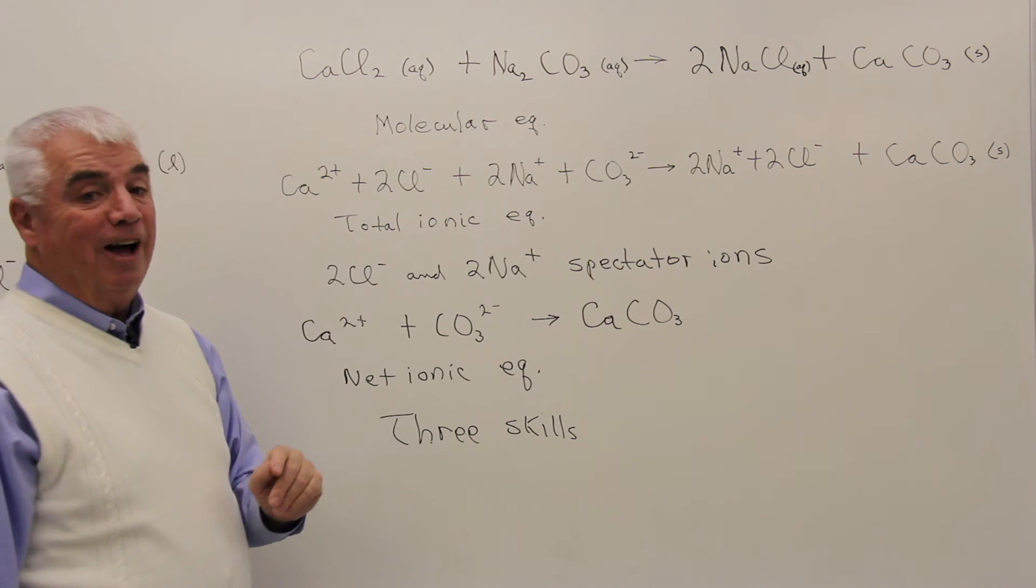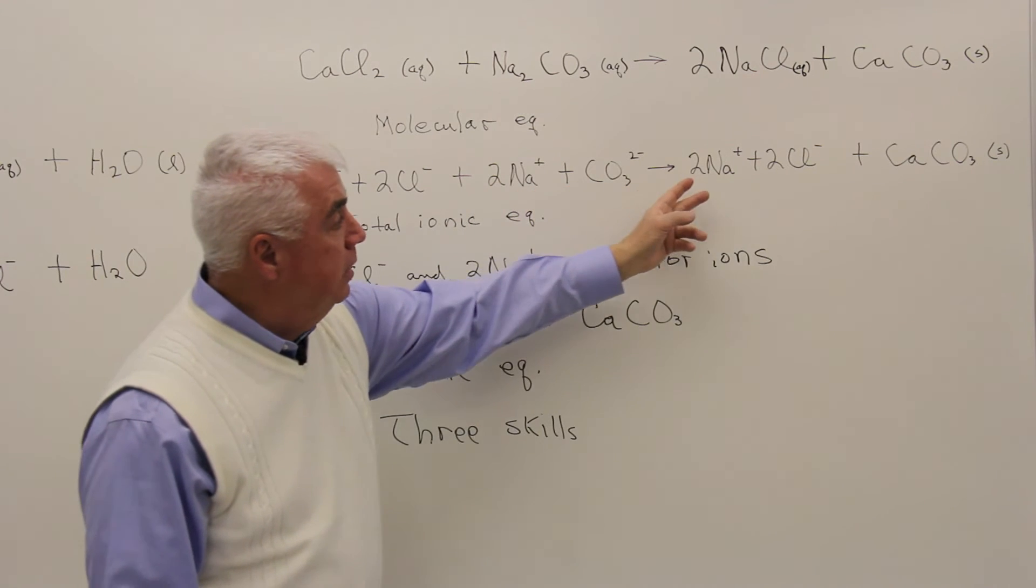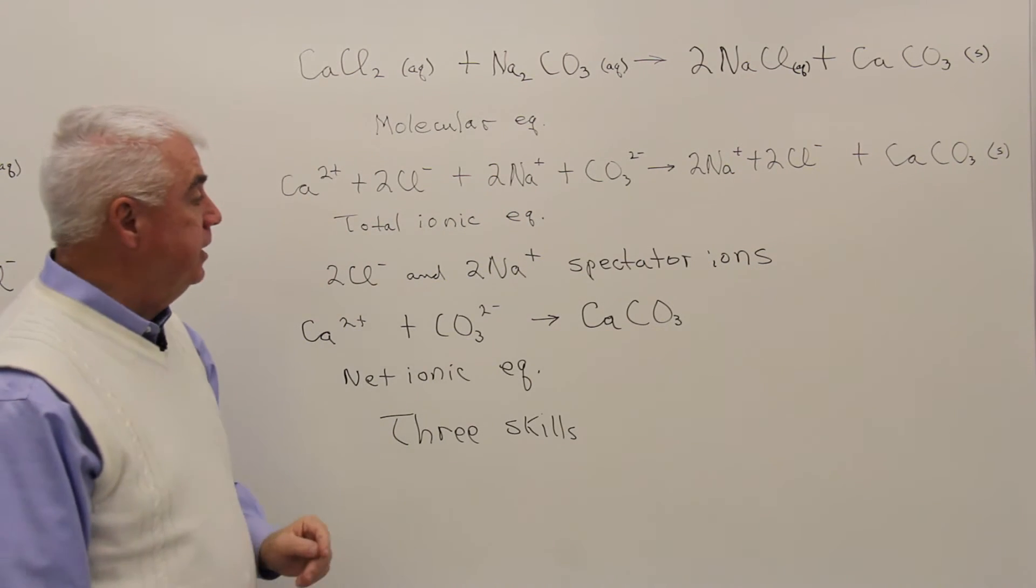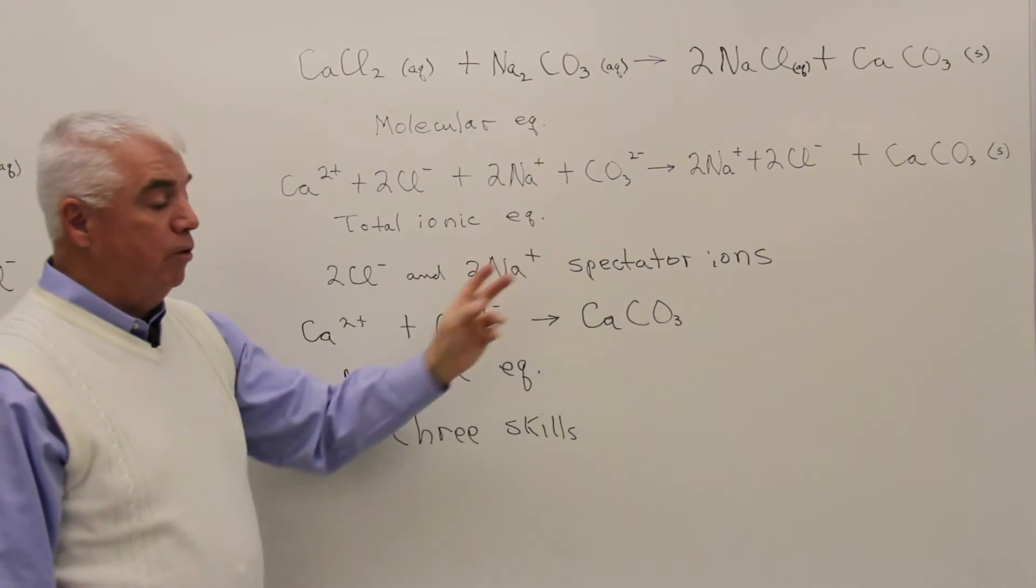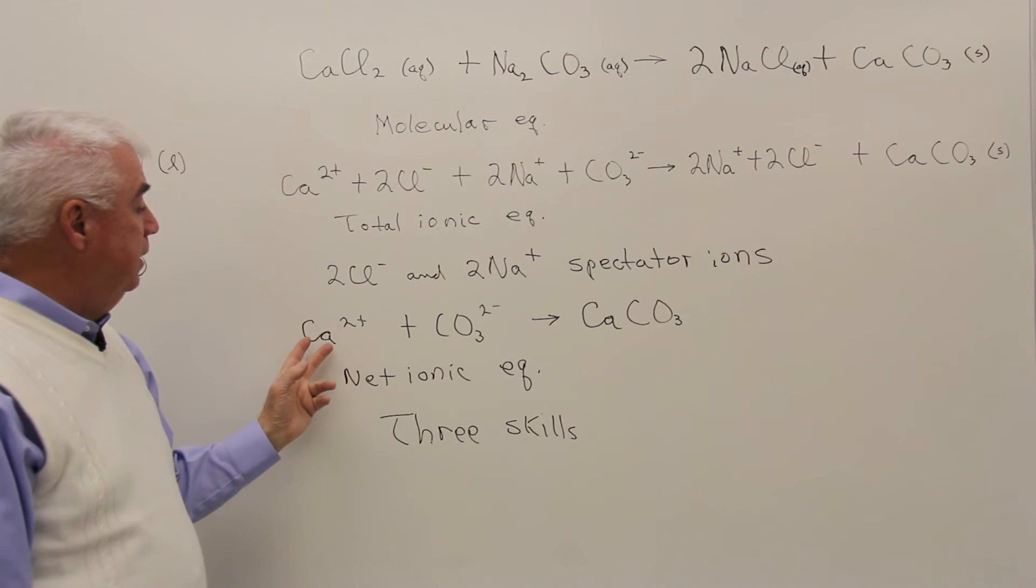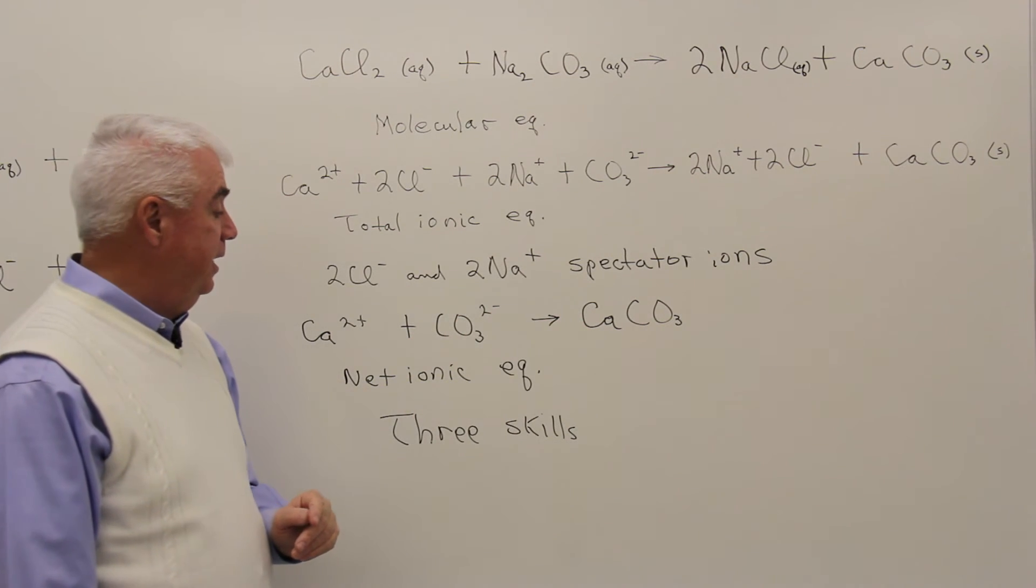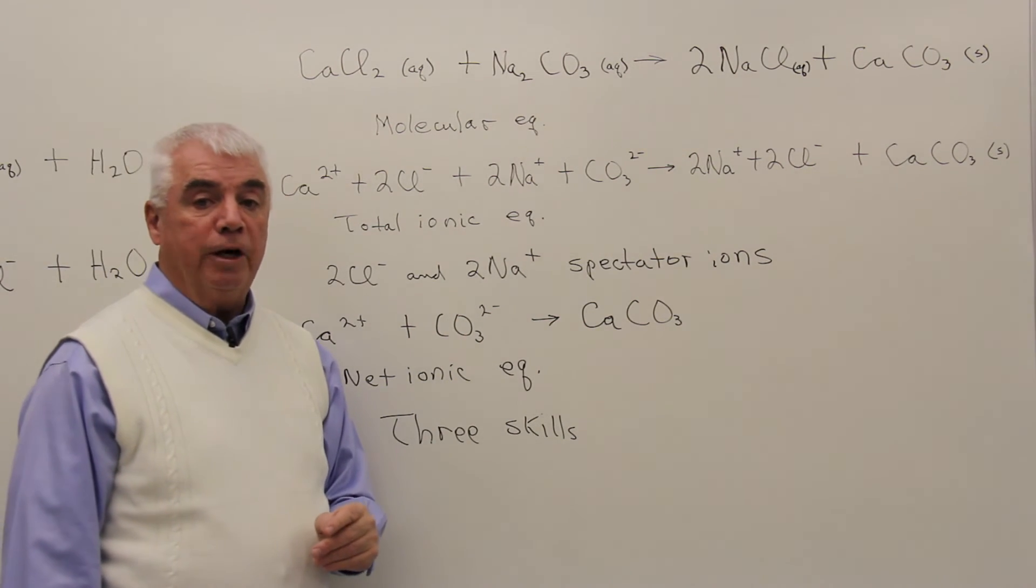Notice the spectator ions now, here's chlorine, and sodium, on the left and on the right, in exactly the same form, those are the spectator ions. So let's subtract them out, we have calcium plus carbonate to give calcium carbonate as our net ionic equation.